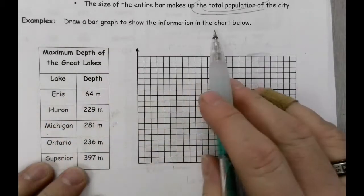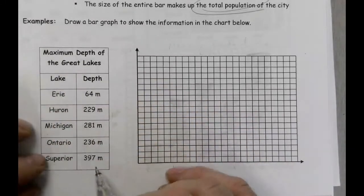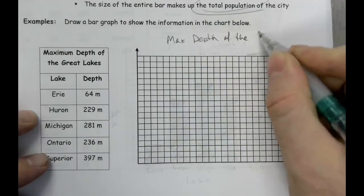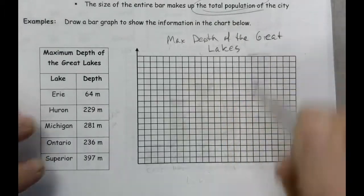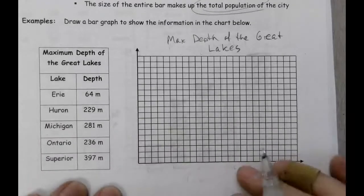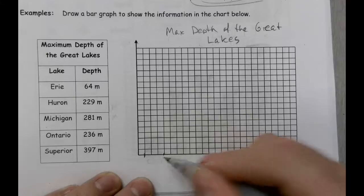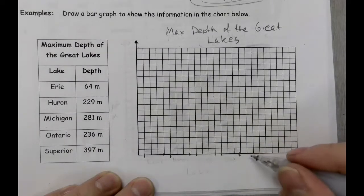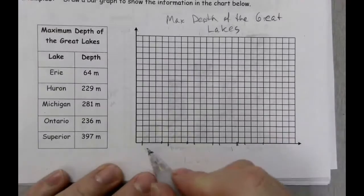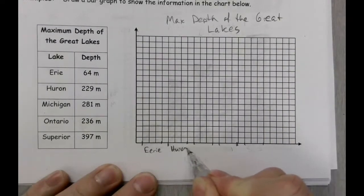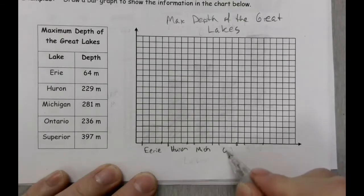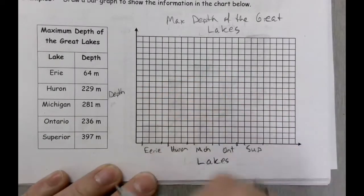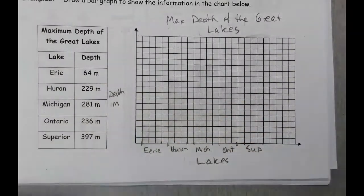Now in this question, we're going to draw a bar graph to show the maximum depths of the Great Lakes. So the title is going to be: Max Depth of the Great Lakes. The lake is going to go along the x-axis as the independent variable. I've given myself three blocks for each bar. So we're going to put Erie, Huron, Lake Michigan, Lake Ontario, and Lake Superior.